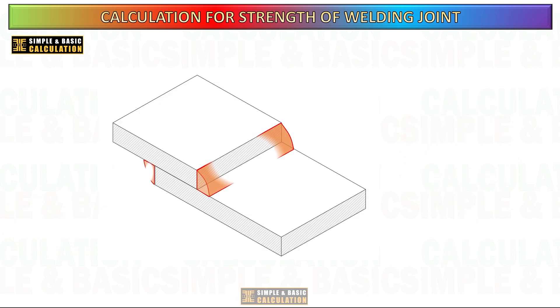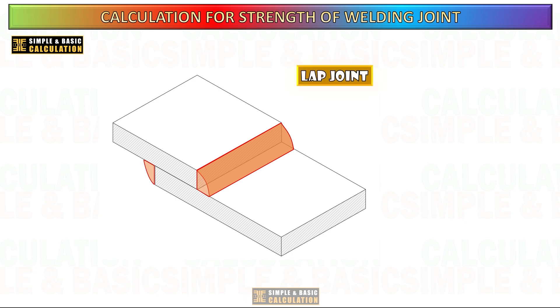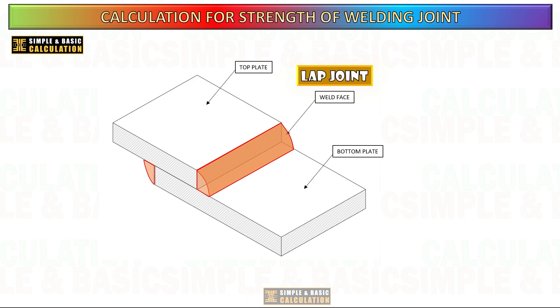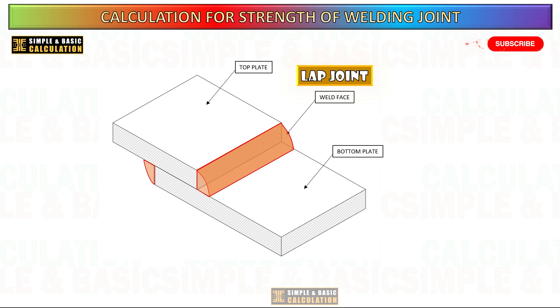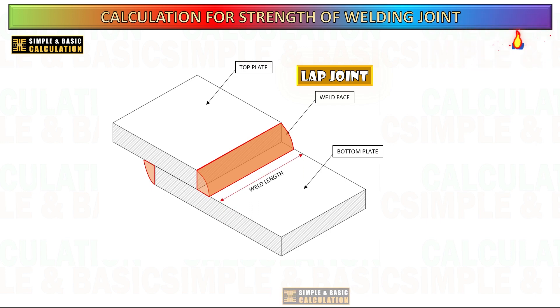Let's go through a sample calculation for determining the strength of a welded joint. We'll focus on a simple fillet weld in a lap joint, which is a common type of weld used in construction and fabrication.